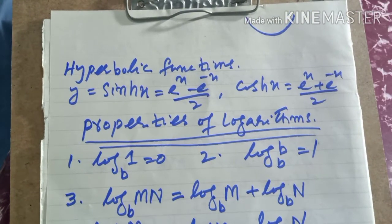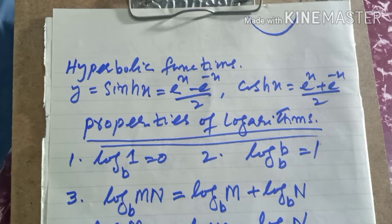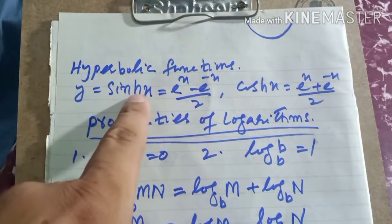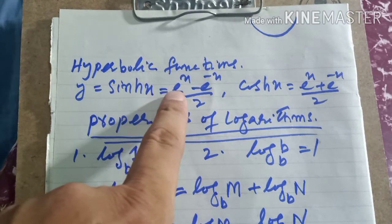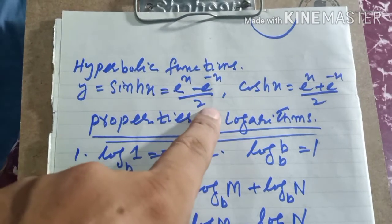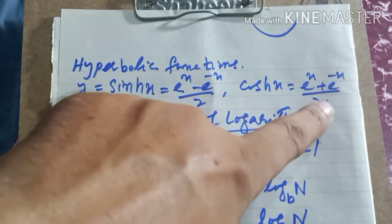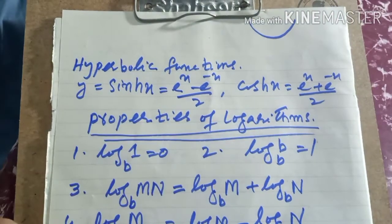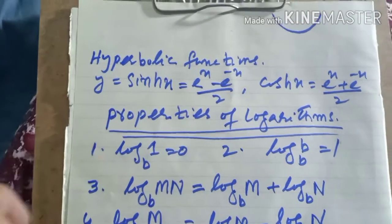Then there is the hyperbolic function. For example, y = f(x) = sinh(x). The 'h' here denotes hyperbola. It is defined as sinh(x) = (eˣ − e^(−x))/2 and cosh(x) = (eˣ + e^(−x))/2. These are called hyperbolic functions because the curve they produce forms a hyperbola.